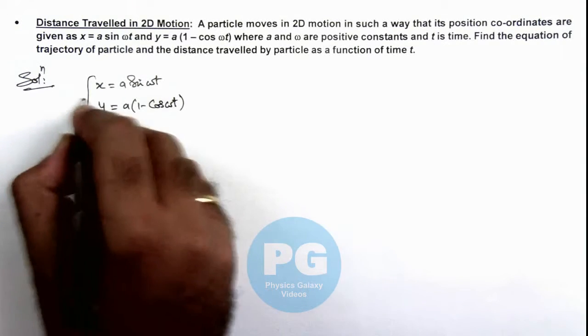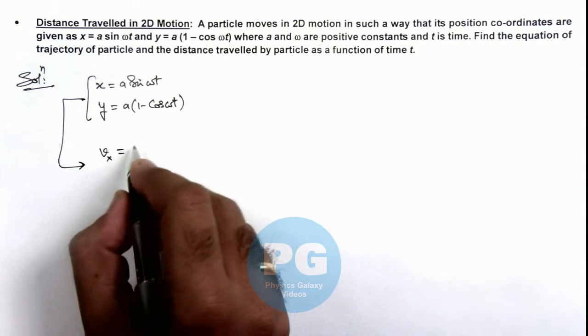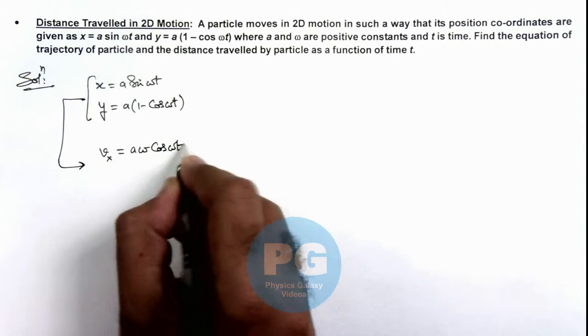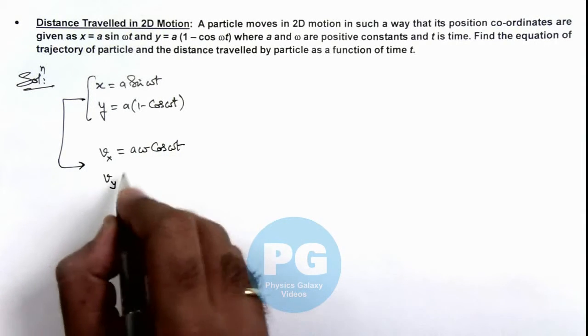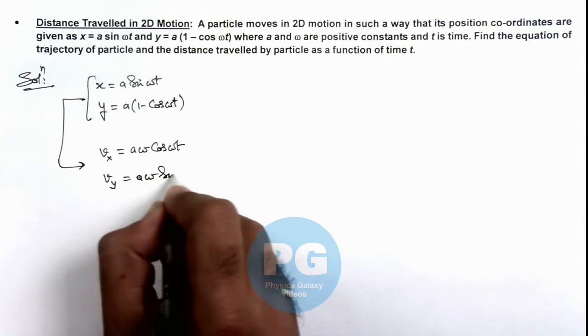From these two values we can get the velocity of particle in x direction as aω cos(ωt), and velocity in y direction we can calculate as aω sin(ωt).